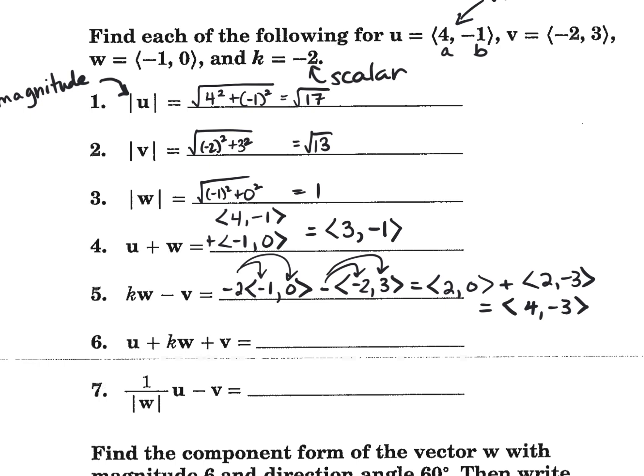So why don't you guys try u plus kw plus v? The stack and multiply and all that fun stuff. It's not hard. When you multiply by a scalar, it's literally like distributing it in. It's like distributive property for vectors. So try u plus kw plus v.